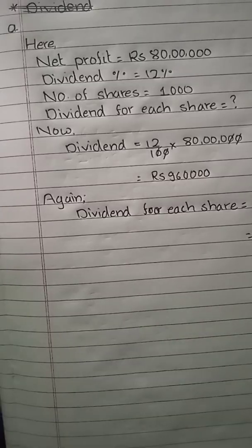Without wasting any time, let's begin. Question one: A business company makes a profit of Rs. 80 lakhs in a year. The board of directors declared 12% dividend from the net profit. If the company had sold 1,000 shares, calculate the dividend for each share.